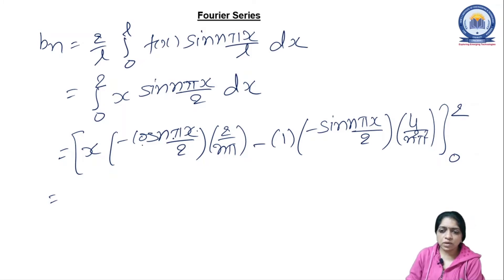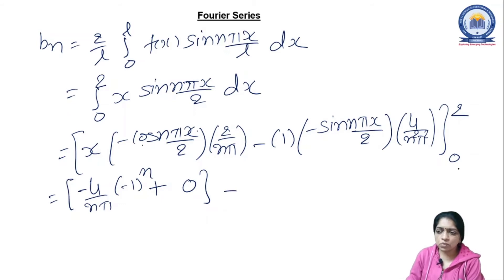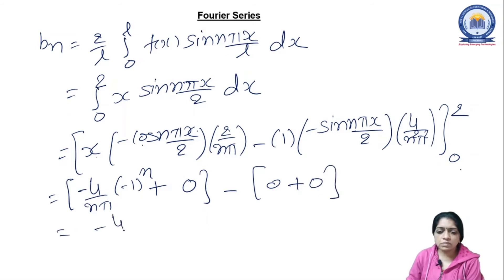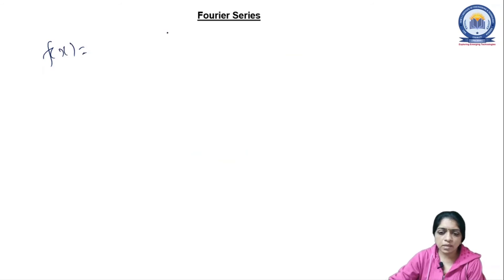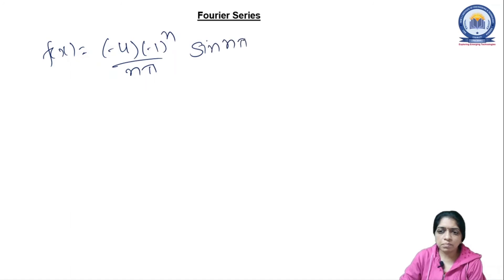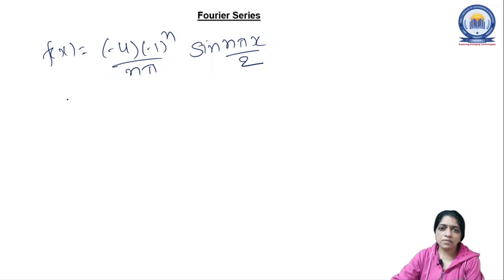Continuing: minus derivative of x = 1 times integration of −cos gives −sin(nπx/2) · (4/n²π²), with limits 0 to 2. After applying the upper limit: 2 cancels, cos(nπ) = (−1)ⁿ, giving −2(−1)ⁿ/nπ; sin(nπ) = 0. For the lower limit: 0 times anything is 0 and sin(0) = 0. So bₙ = −4(−1)ⁿ/(nπ). Therefore f(x) = summation n=1 to infinity of [−4(−1)ⁿ/(nπ)] · sin(nπx/2). This is the half range sine series for f(x) = x on [0, 2].